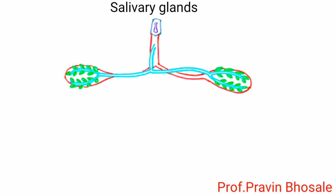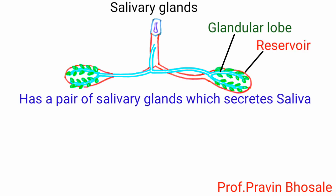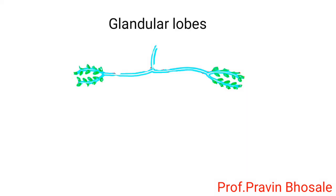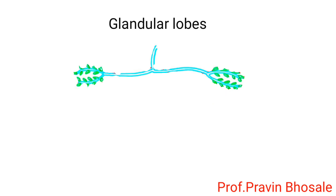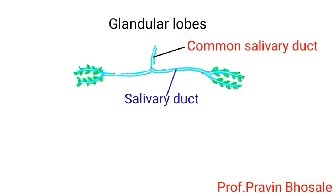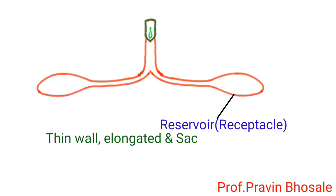Salivary glands: cockroach has a pair of salivary glands which secrete saliva. Each salivary gland has two granular lobes and a reservoir. The glandular lobe consists of several irregular-shaped, white-colored lobules which secrete saliva. Each gland has a salivary duct, and both ducts unite to form a common salivary duct.